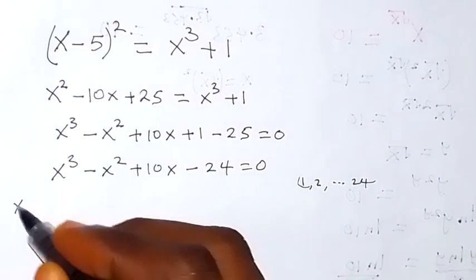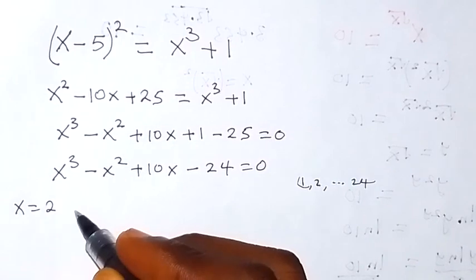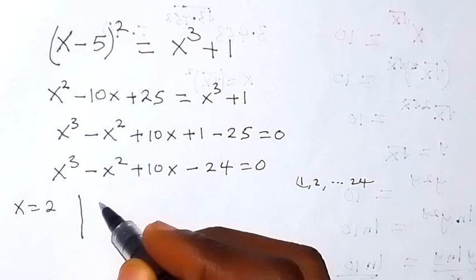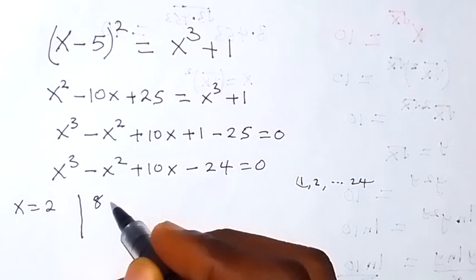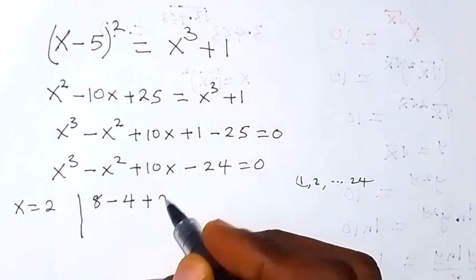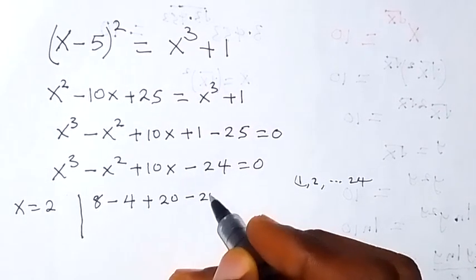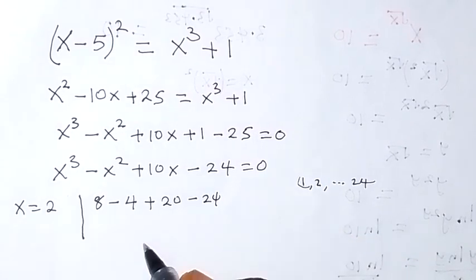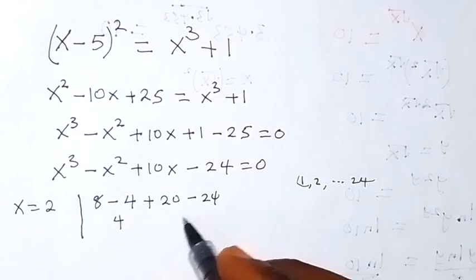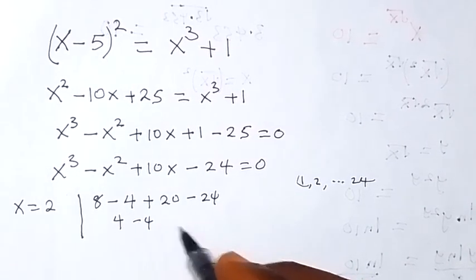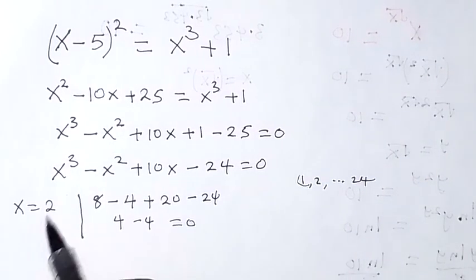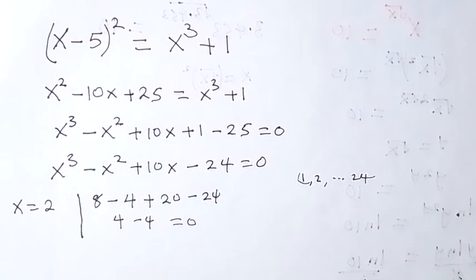Let's check x equals 2. Substituting x equals 2: we have 2 raised to the power 3, that's 8, minus 2 raised to the power 2, that's 4, then plus 10 times 2, that's 20, then minus 24. Let's see: 8 minus 4 is 4, then 20 minus 24 is minus 4, and 4 minus 4 is 0. So we can say x equals 2 is the root of this polynomial.